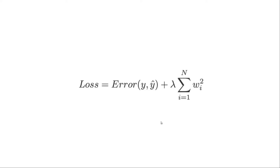If we set λ to a relatively large number, it incentivizes the model to set the weights close to zero. The objective of stochastic gradient descent is to minimize the loss function, and since our loss is now the original loss plus the regularization term, the algorithm will try to reduce that entire expression. With a high λ, the algorithm will choose very low weights to minimize the whole expression, pushing the weights as close to zero as possible.